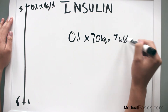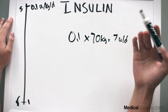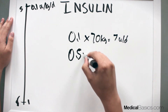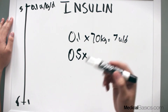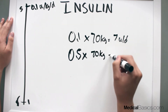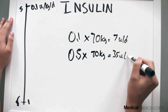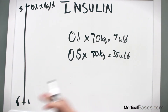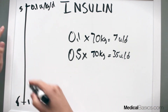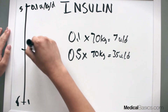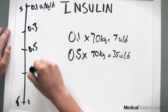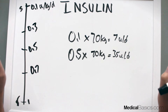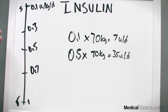For example, a sensitive patient at 70 kilograms with a factor of 0.1 requires 7 units in a given day. A more resistant patient with a factor of 0.5 times 70 kilograms requires 35 units per day. Typically in the hospital you'll deal with three numbers: 0.3 for a sensitive patient, 0.5 for moderate, and 0.7 for a resistant patient. These give you the average daily insulin requirement.